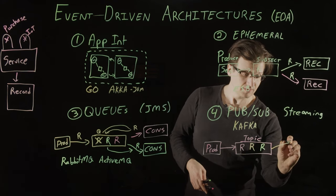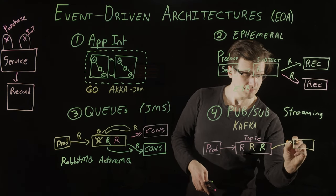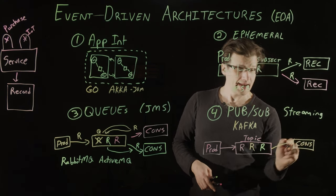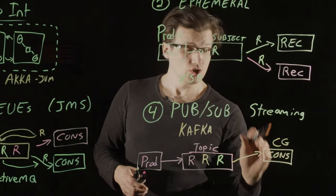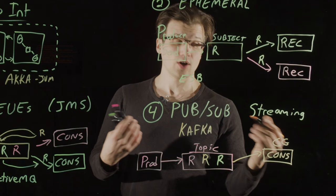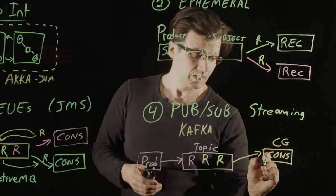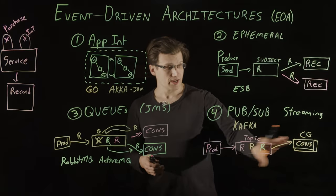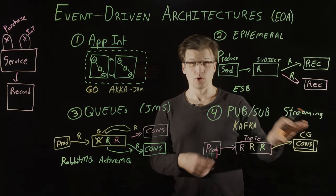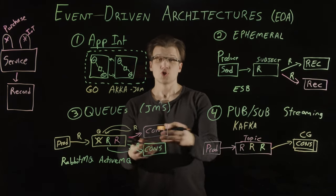Topics have one or more consumers. And at least in Kafka, the consumers can belong to a common consumer group. What this means is it lets you divide up the work such that all of the consumers in this consumer group are working together, sharing the load, similar to with queues where we're doing round-robin.